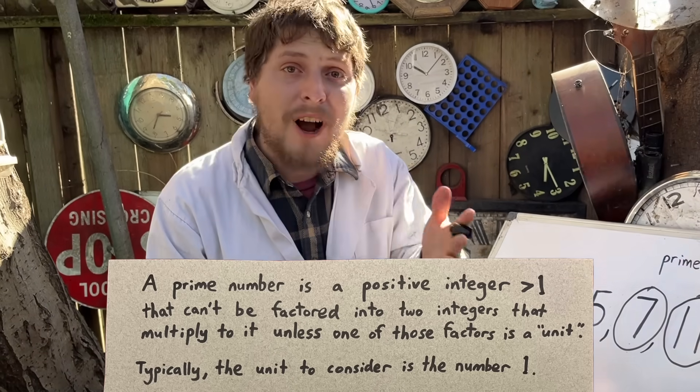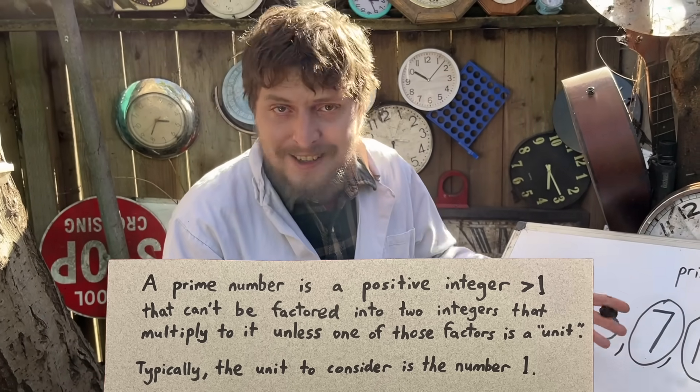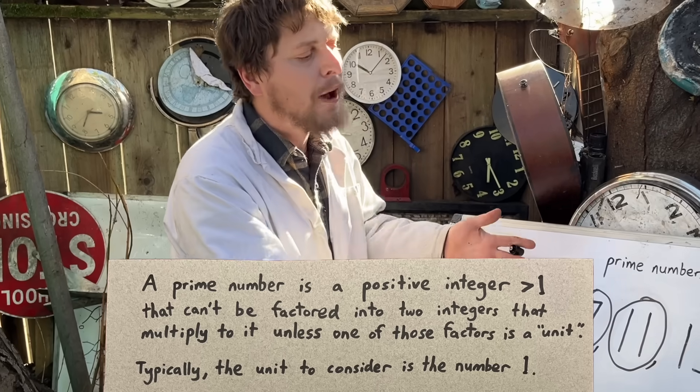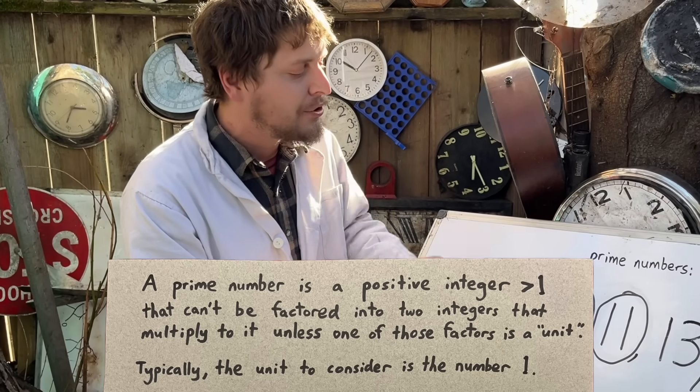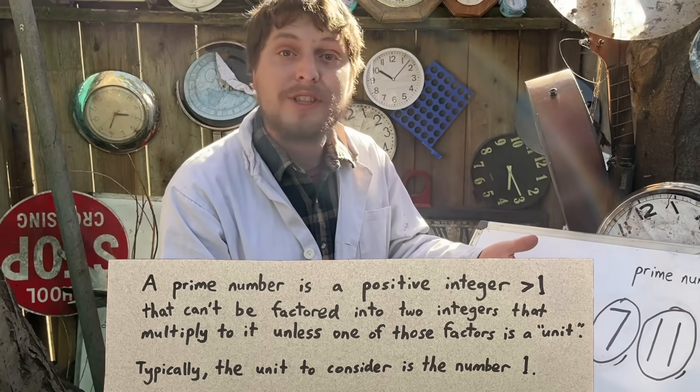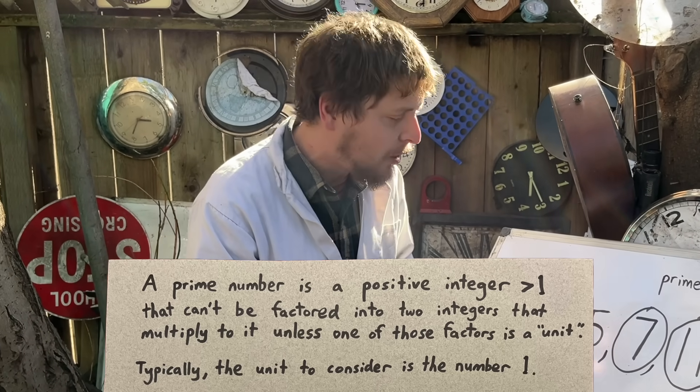Now typically, a prime number can be defined as a number that can't have a pair of factors that multiply into it, unless that pair of factors includes the number one, being one times itself.